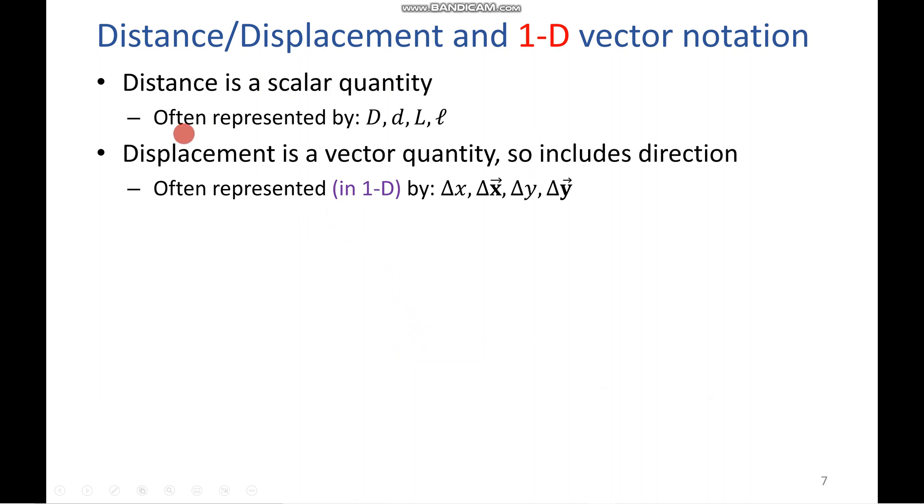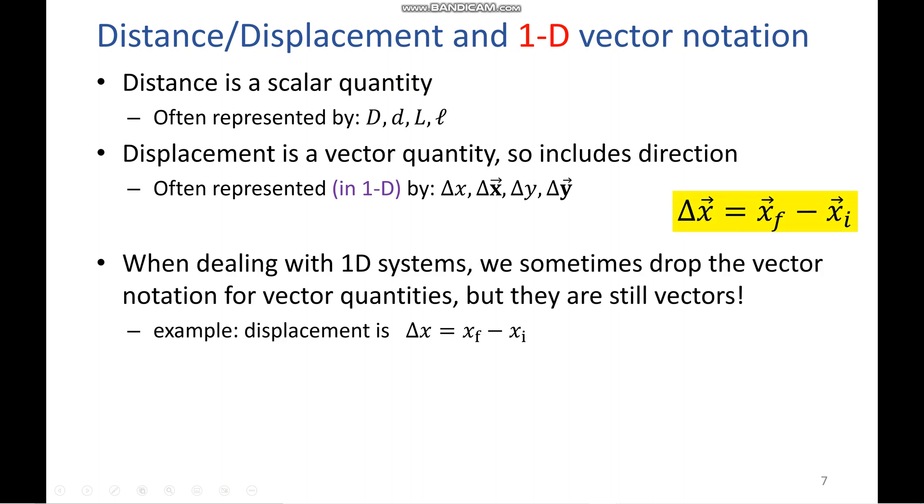All right. So, here we have various ways you might see distance represented in the world of physics. You've got these right here, D, L, depending on where you learn it. And then, note for displacement down here, it's a little more complicated, but you're generally going to see Greek letter delta. And then, our arrows to indicate our vectors on the top. Make sure to pay attention to context when dealing with these 1D vectors because it's not uncommon for vector identifiers to be dropped for the sake of cleanliness. But, they're still vectors, so make sure to keep that in mind when you're doing these problems.